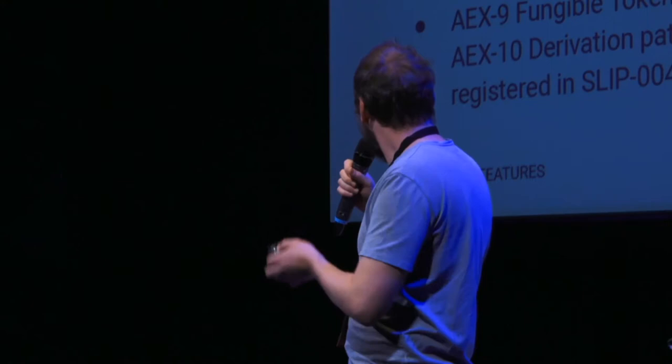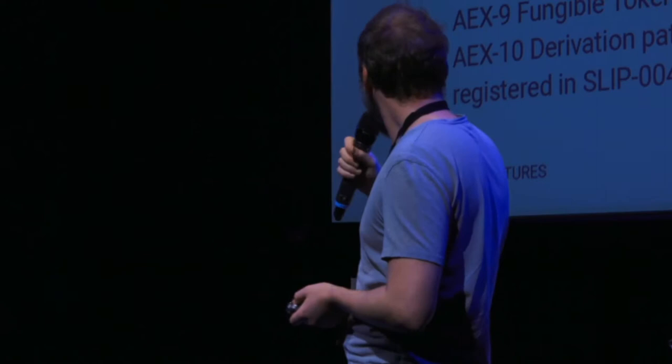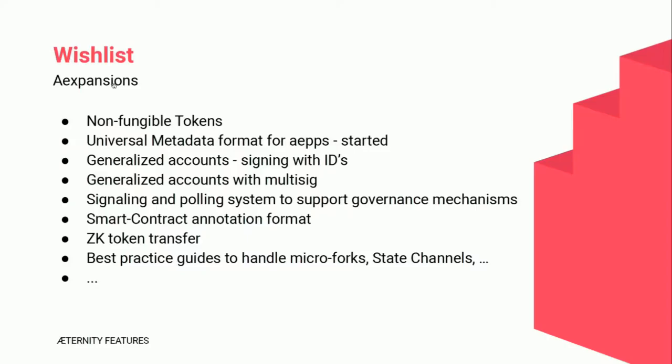There is also an expansion about key derivation — again, this is for wallets, and very interesting if you want to build a wallet, definitely have a look there. So what is on our wish list? Non-fungible tokens, of course — this also goes together with the plannings in the core team about what will happen with tokens.